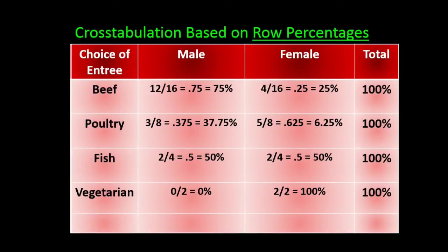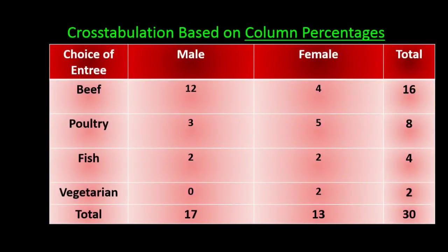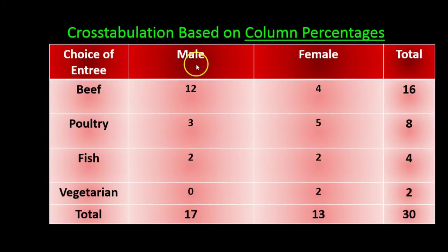Here's what the row percentage table looks like in its final form — we get rid of the column totals and look across each row. Now let's see how this would work for column percentages. We take the first number in the first column, which is 12, and divide it by 17, which is the column total for males. So 12 out of the 17 males ordered beef, and 12 divided by 17 gives us 70.59 percent.